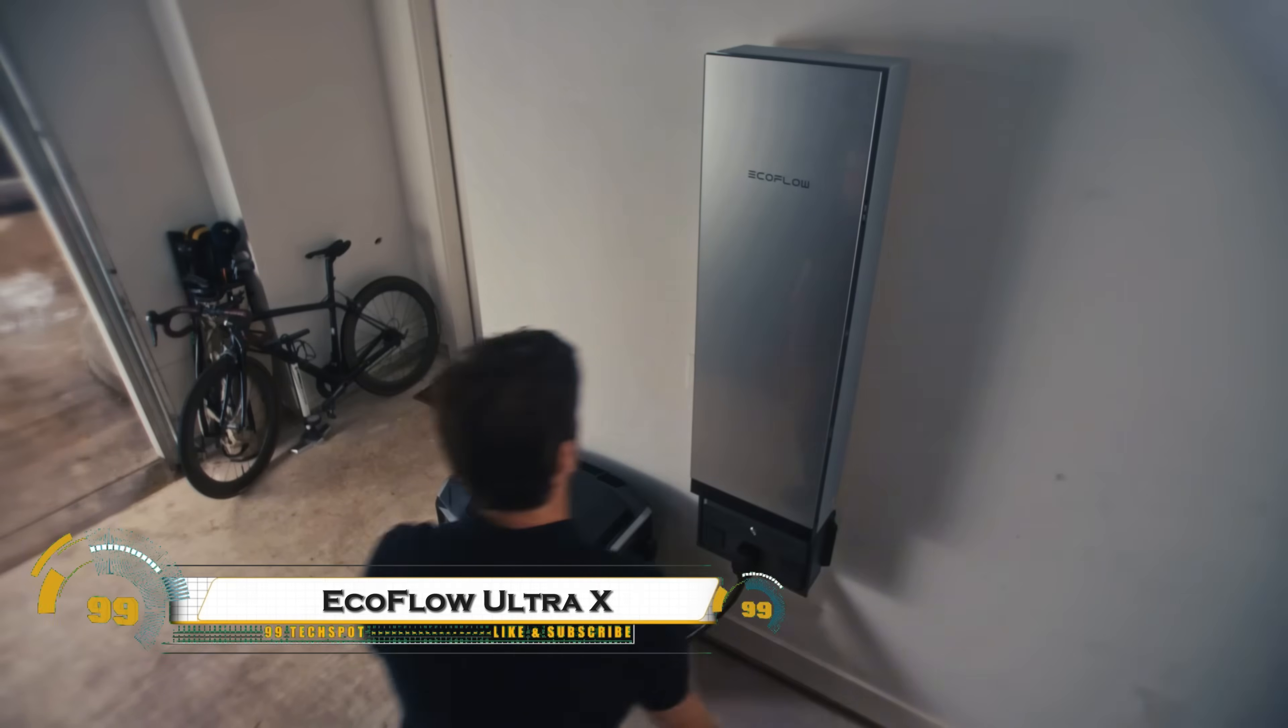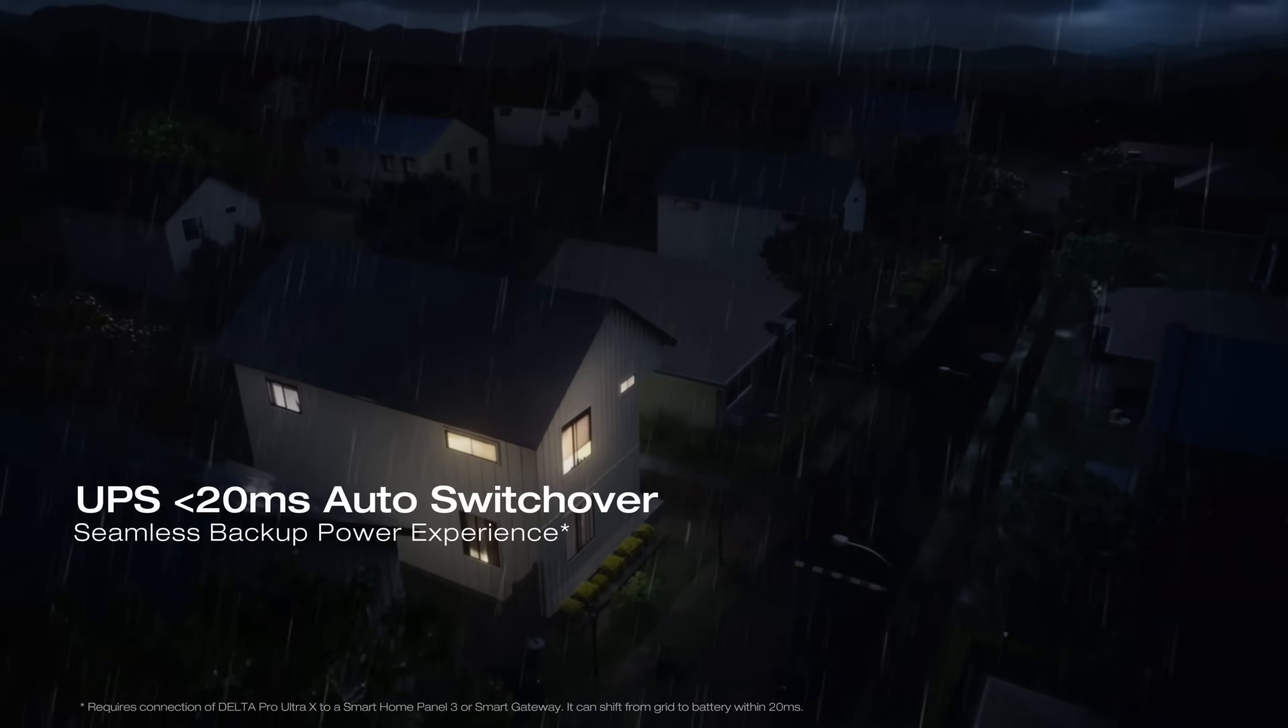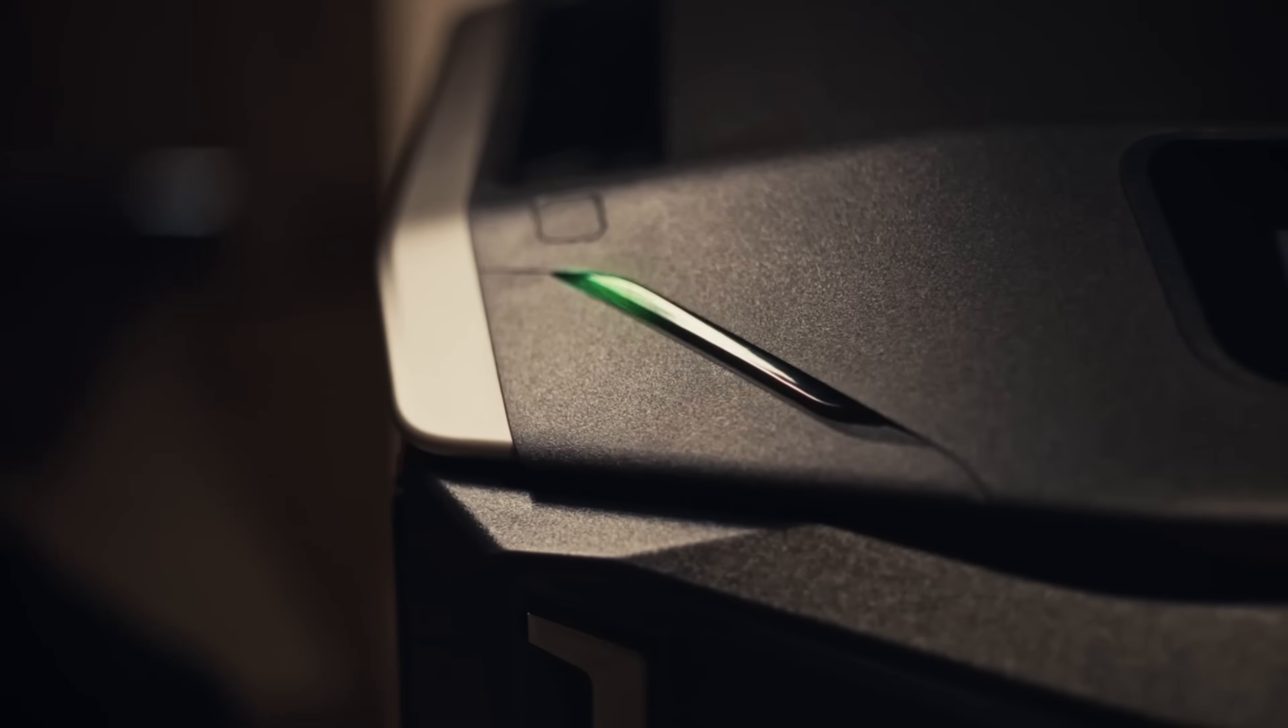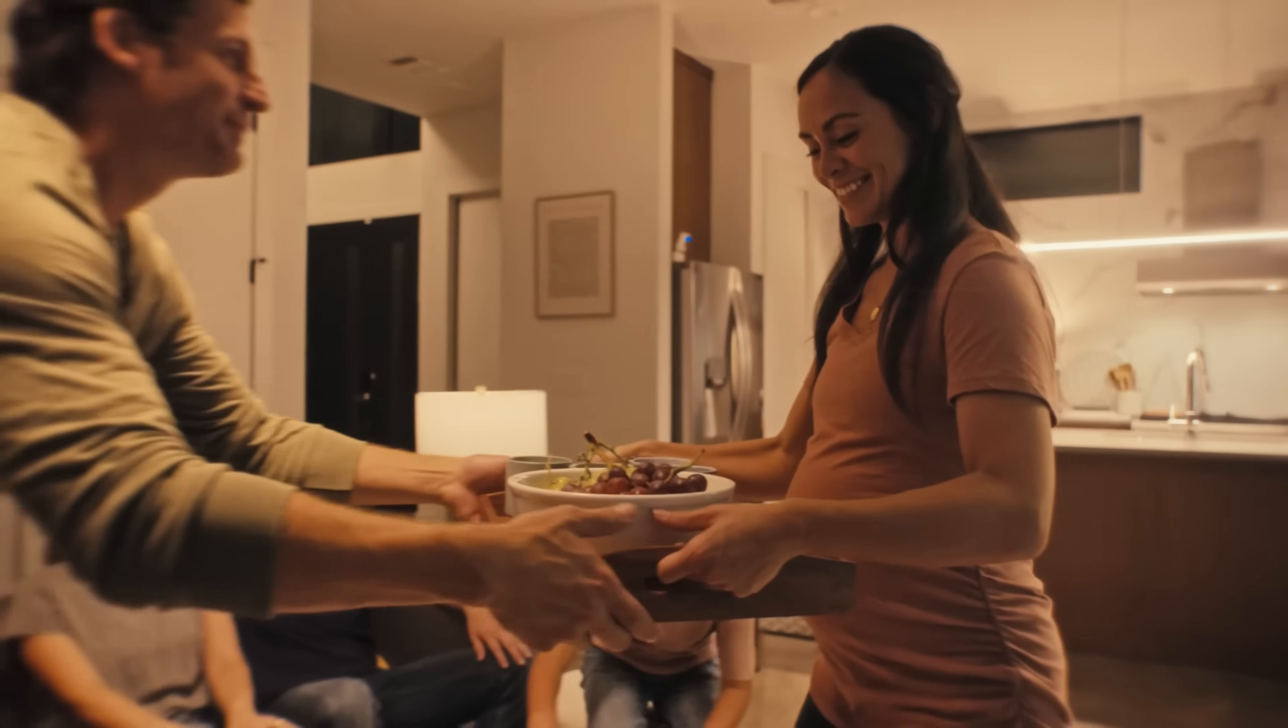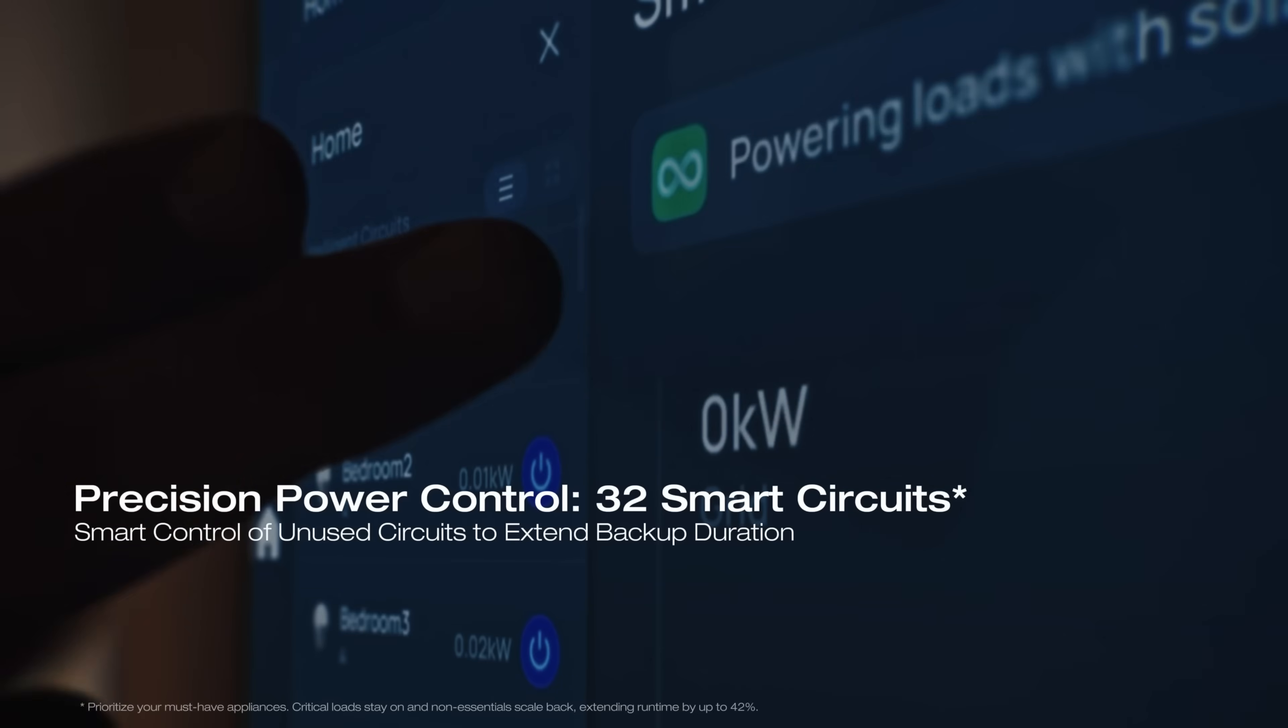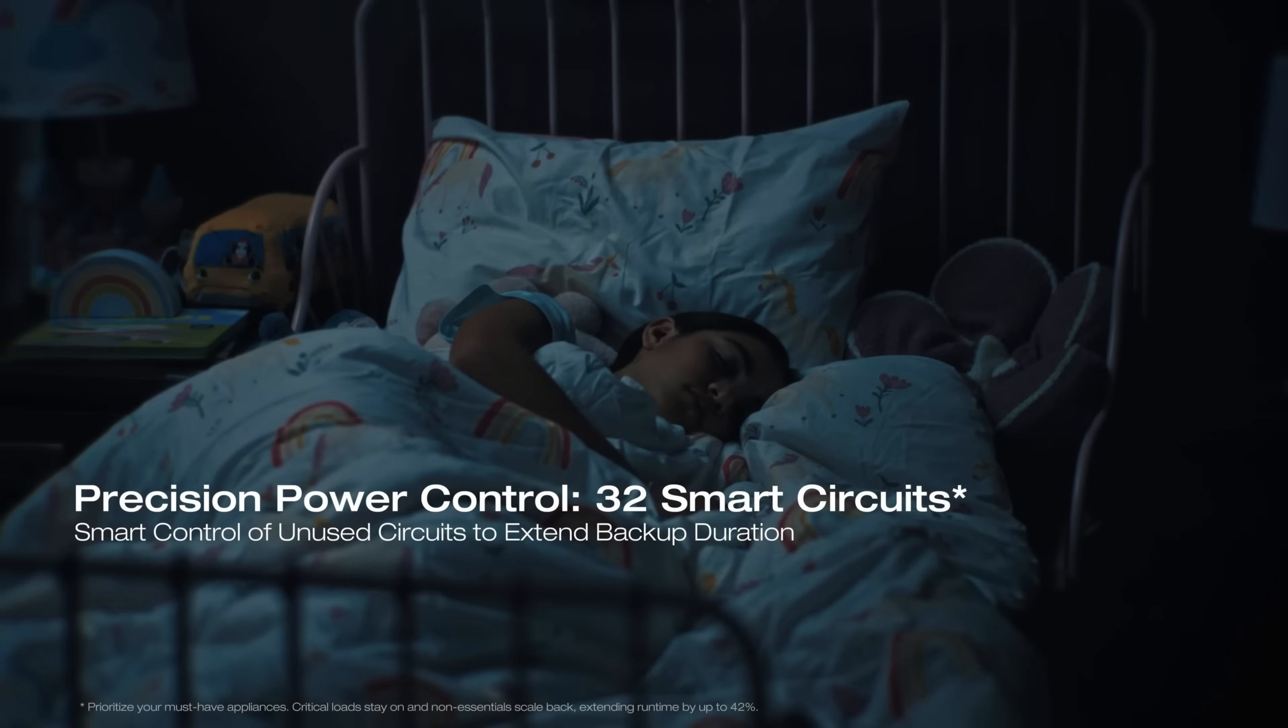EcoFlow Delta Pro Ultra X is a compact, whole-home battery system offering powerful 12-kilowatt continuous output, expandable to 36 kilowatts, and scalable storage from 12 kilowatt hours to 180 kilowatt hours. It installs quickly within seven days and integrates smart energy management via the Smart Home Panel 3, giving you control over individual circuits.